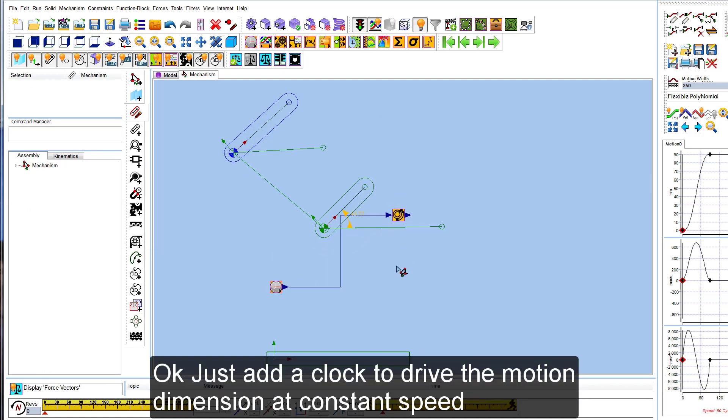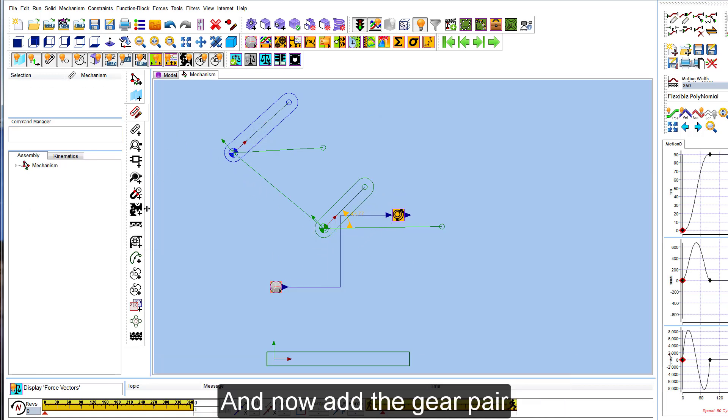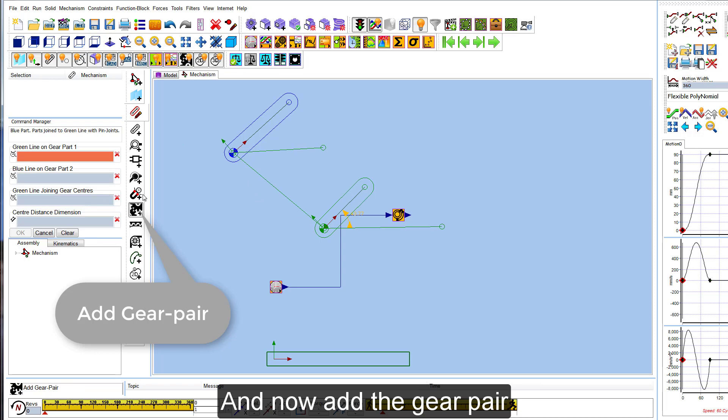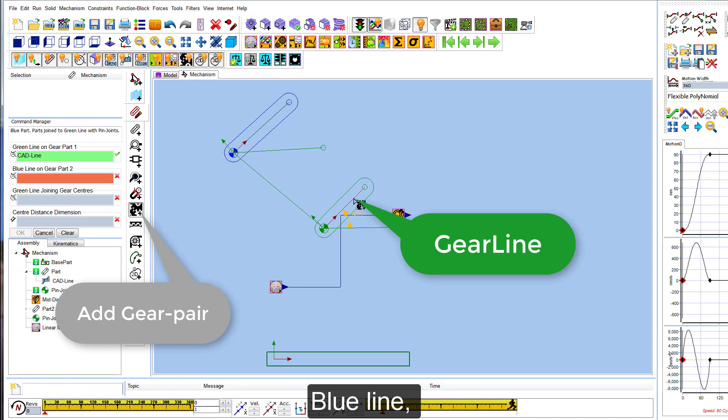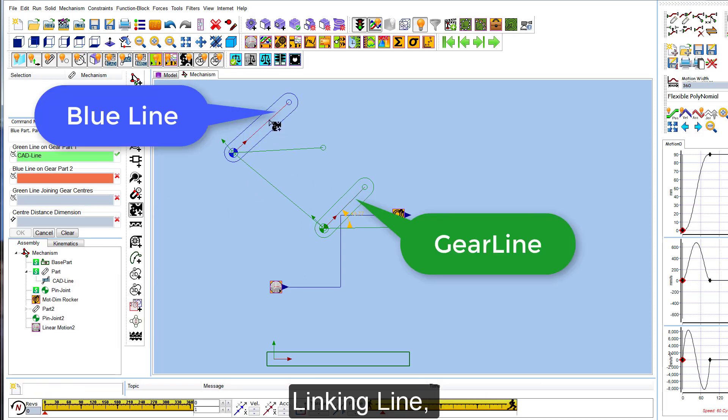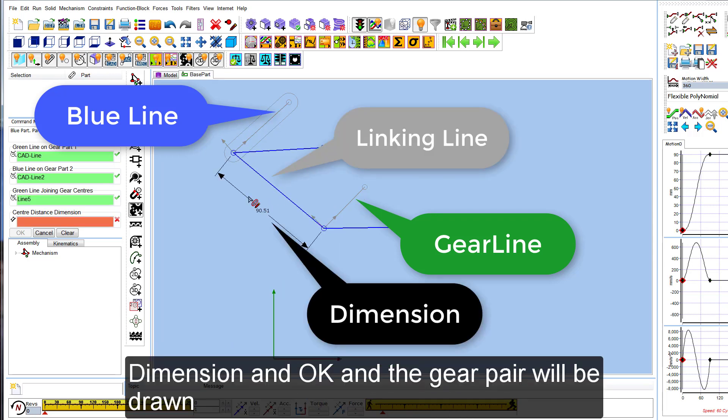Just add a clock to drive the motion dimension at constant speed, and now add the gear pair. Green line, blue line, linking line, dimension, and then OK and the gear pair will be drawn.